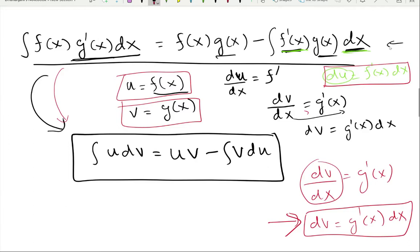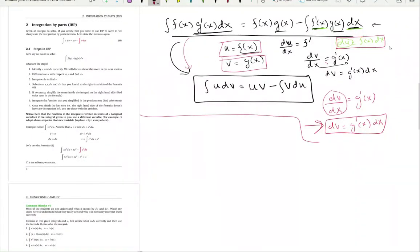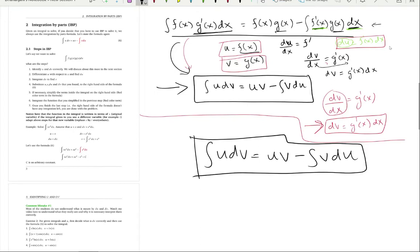Now we have the u and dv formula. The most important thing is how to use it. The formula is: integral of u·dv = u·v minus integral of v·du. Most students struggle to figure out what to choose for u and what to choose for dv, but let's first learn how to use the formula correctly.